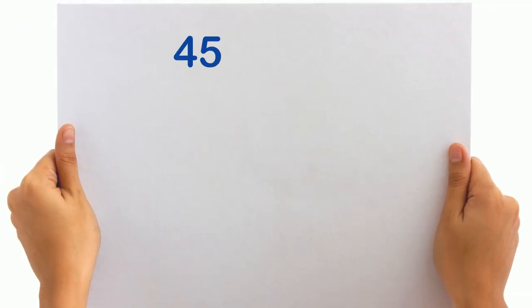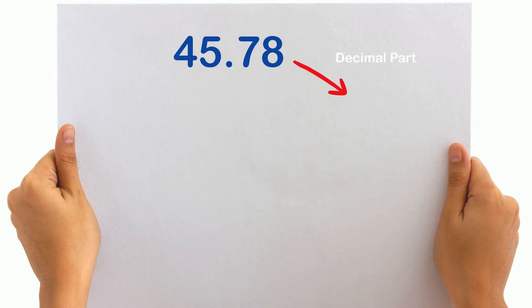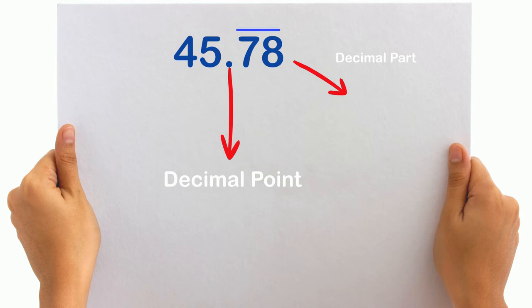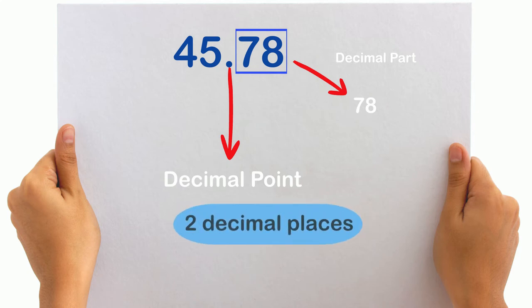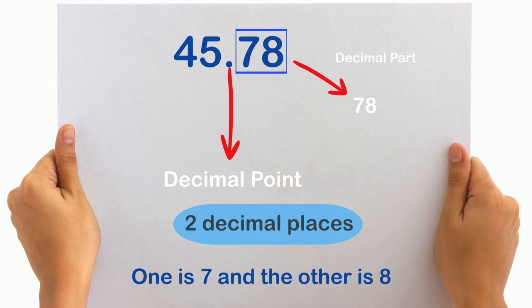The number of digits that make the decimal part of the decimal number are referred to as the number of decimal places. For instance, in 45.78, there are two decimal places — one is 7 and the other is 8.